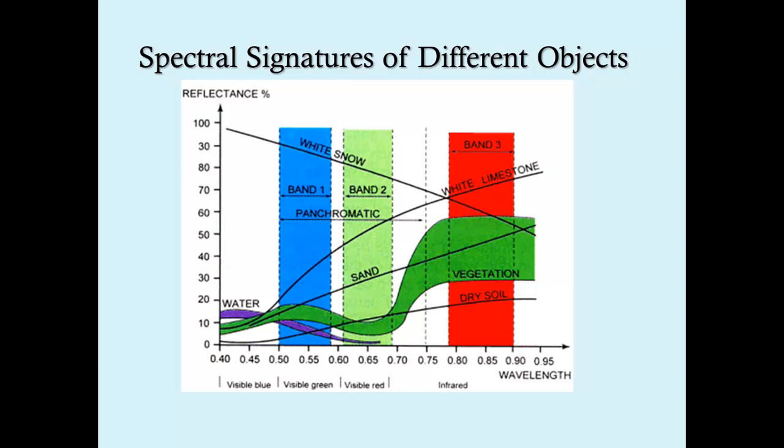And so band one was collected in the blue portion, is shown in blue, and it was collected in the green portion of the electromagnetic spectrum.